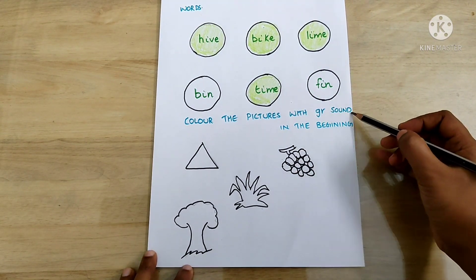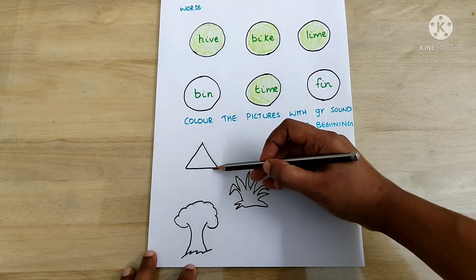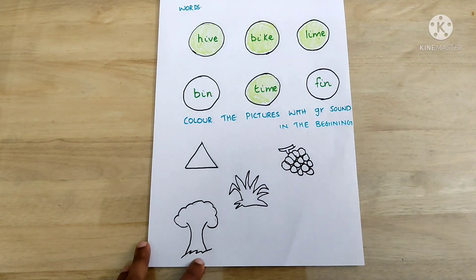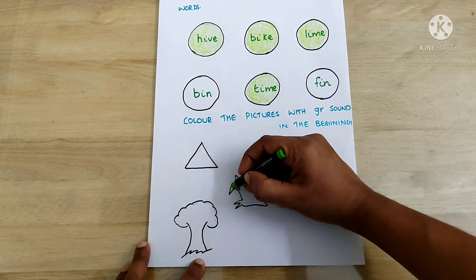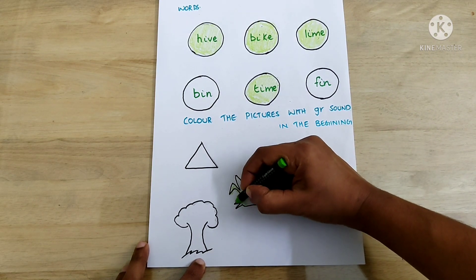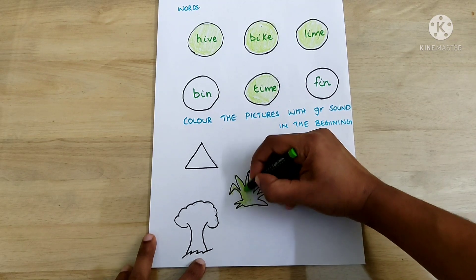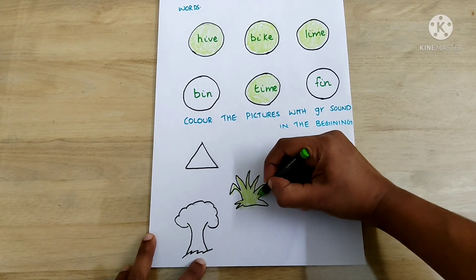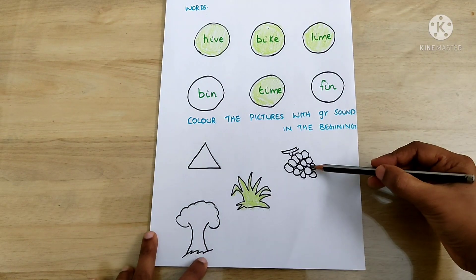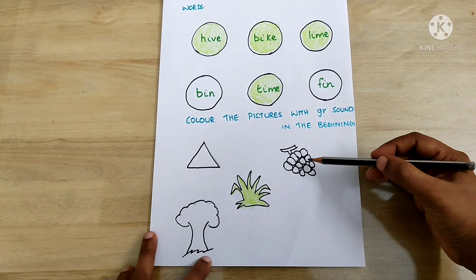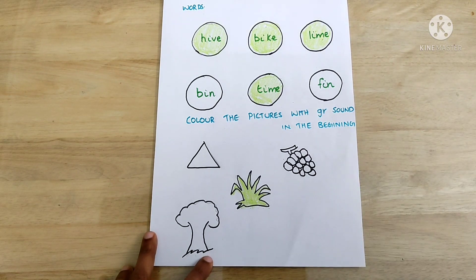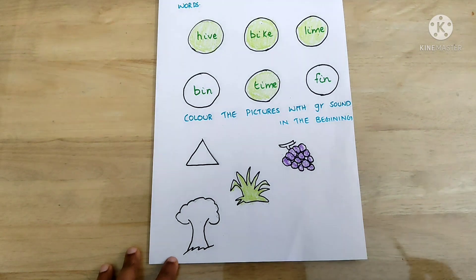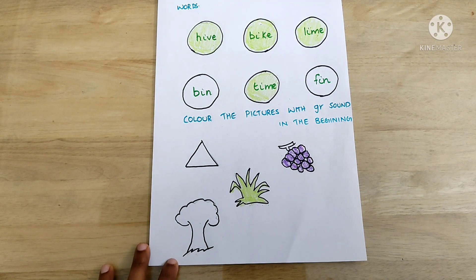Color the pictures with 'gr' sound in the beginning. Triangle — does not start with 'gr'. Grass — it starts with 'gr' sound. Grapes — grapes starts with 'gr' sound. Tree — tree does not start with 'gr' sound, it starts with 'tr' sound.